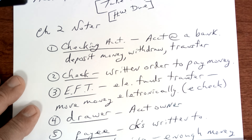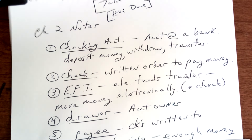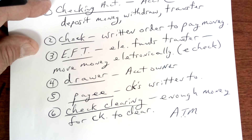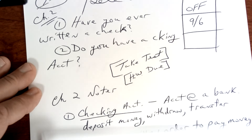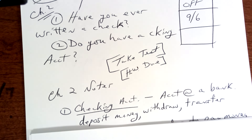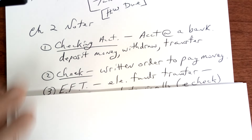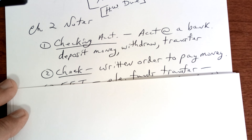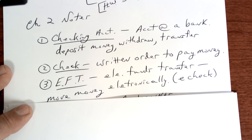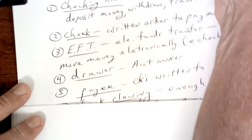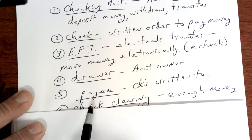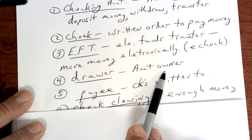This is for periods one through six. A checking account is an account at a bank where you make deposits, withdraw money, and transfer money. A check is a written order to pay money. Electronic funds transfer is where you transfer money electronically — maybe to another person, maybe to a credit card.